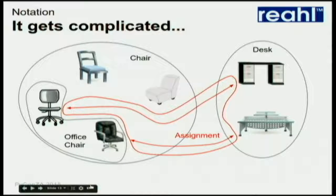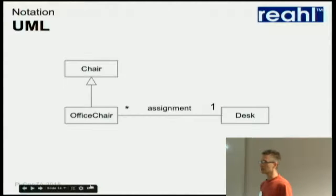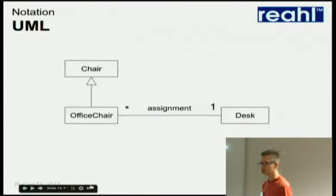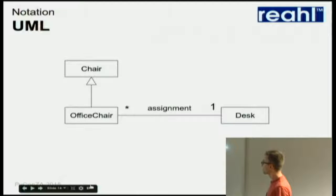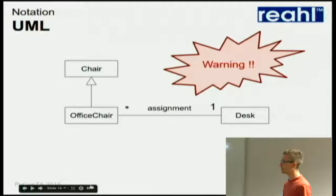If you carry on with Venn diagrams, things get a bit complicated, so people came up with different notations and finally standardized on UML in the 90s. This then says exactly the same thing: we conceptually have a thing called a chair, office chairs are chairs — they are chairs but we can say more stuff about them. For example, they can be assigned to desks and exactly how the multiplicity works. I personally have the opinion that you should be warned if you use UML, because this notation has got a lot of details that really defeat the purpose if you use all of it. I prefer to stick to simple bits of the notation like this.